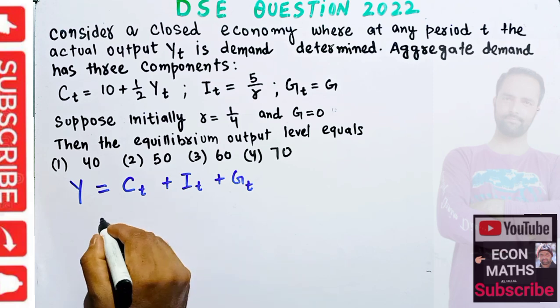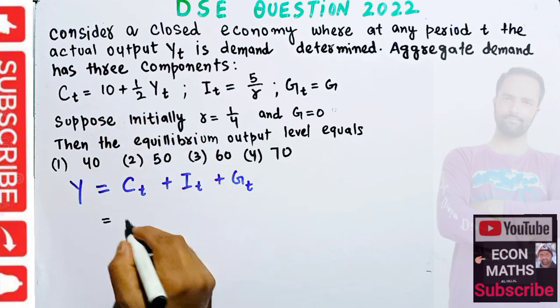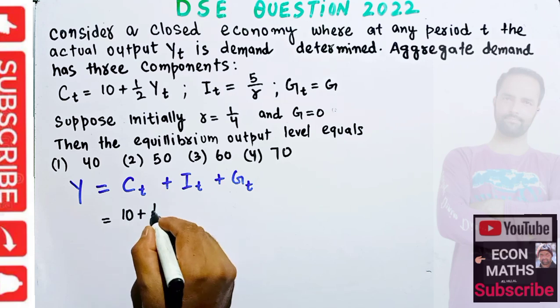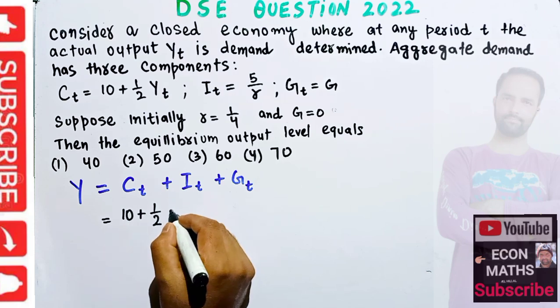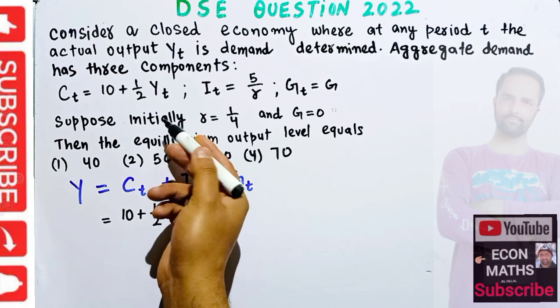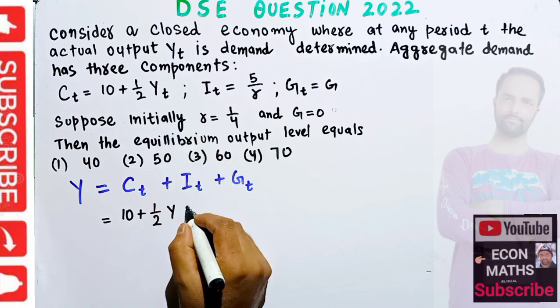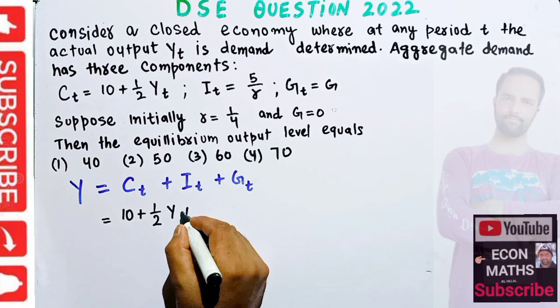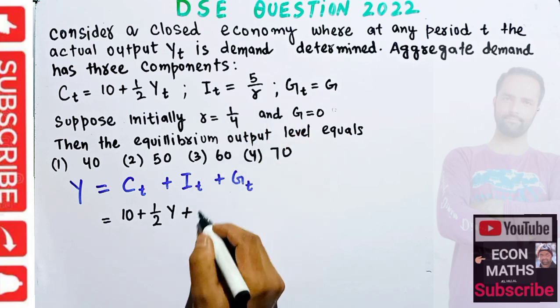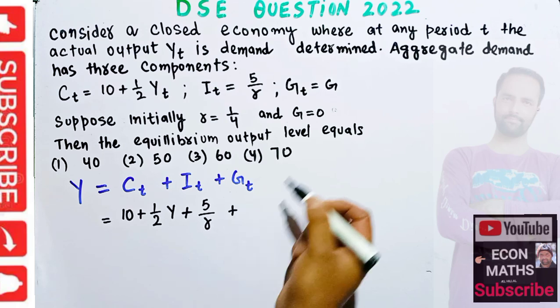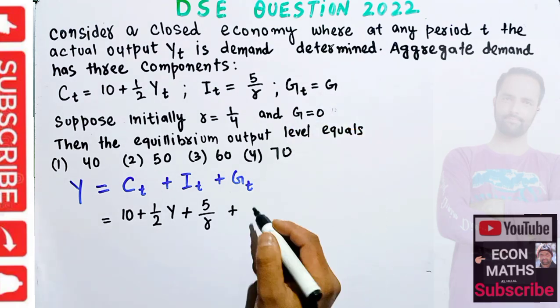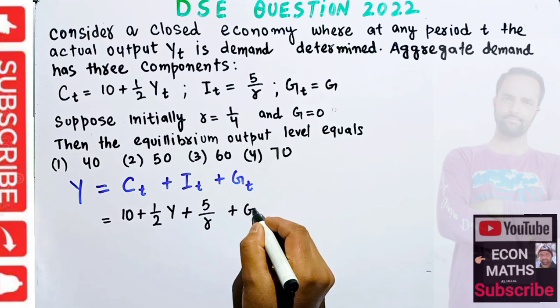The consumption function given is 10 + (1/2)Y, plus investment is given by 5/r, plus government expenditure is autonomous which is G.